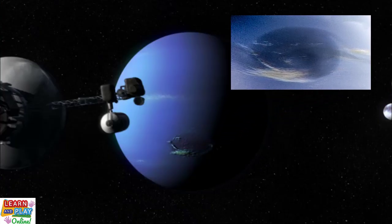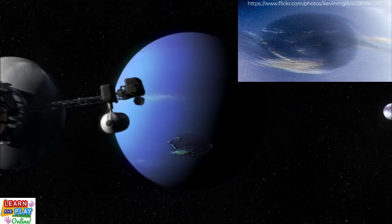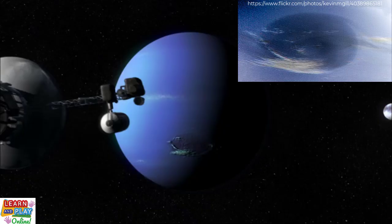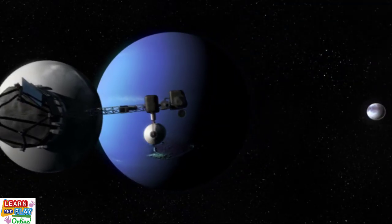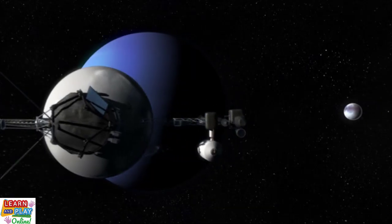It was a gigantic storm that raged on Neptune's surface. The storm was believed to be the size of Earth or possibly even larger. It has since disappeared.